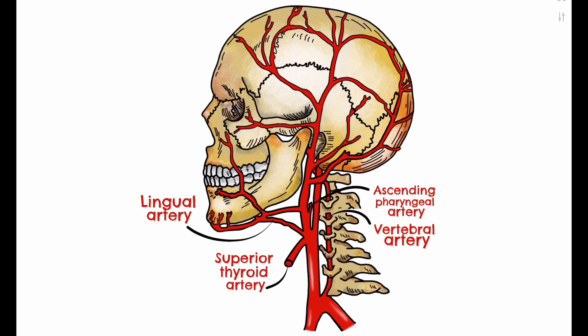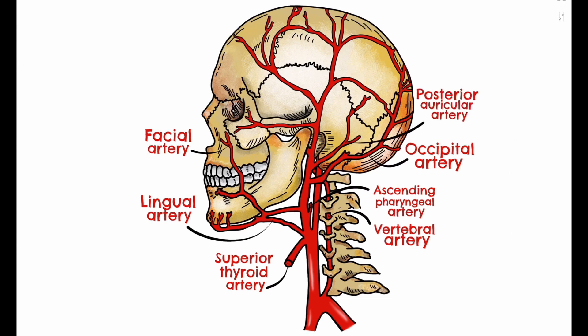The facial artery goes on to supply the tonsils, palate, and submandibular glands. The occipital artery supplies the posterior scalp. The posterior auricular artery supplies the parotid, facial nerve, ear, lateral scalp, and nearby muscles.